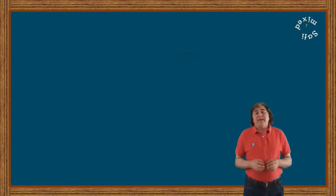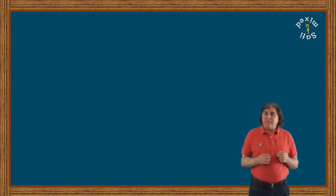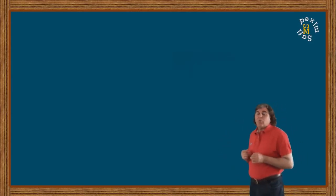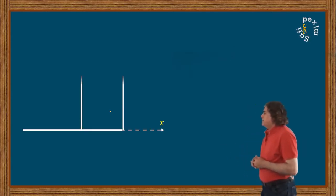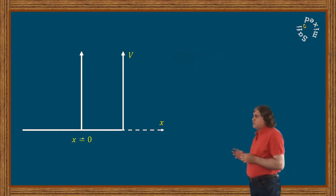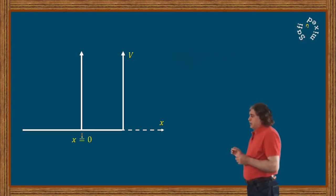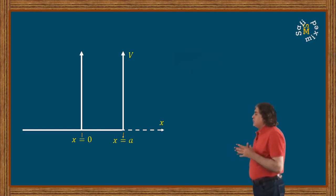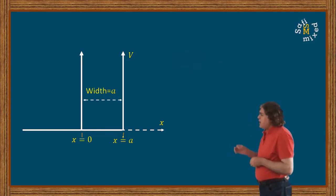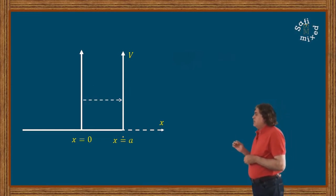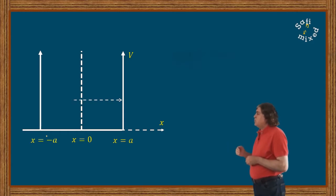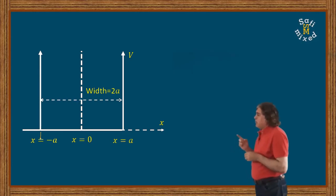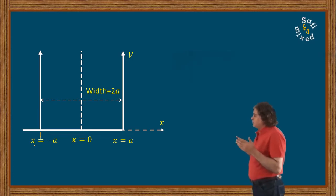Let us first understand the shape of the symmetric infinite potential well in one dimension. The standard infinite potential well has boundaries at x equals 0 and x equals a, making its width equal to a. If I shift the left boundary from x equals 0 to x equals minus a, the boundaries are now located at x equals minus a and x equals a.